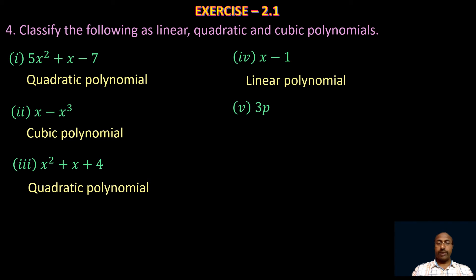Take the fifth one: 3p. It is a polynomial in the variable p and the highest power of p is 1, so it is also a linear polynomial. Take the sixth one: πr². Here π is a constant and r is the variable, and the highest power of r is 2. So the given polynomial is of second degree, and it is a quadratic polynomial.